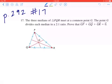Hi everyone, we're looking at number 17 on page 292. The three medians of triangle PQR meet at a common point G. The point G divides each median in a 2 to 1 ratio. Prove that GP plus GQ plus GR equals 0.